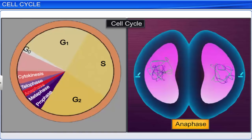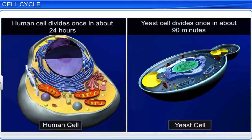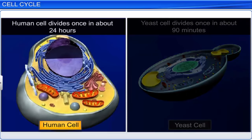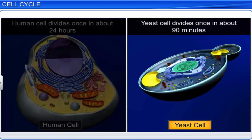The duration of a cell cycle varies from one organism to another. A typical eukaryotic cell, like those in human beings, divides once in about every 24 hours, whereas in yeast, division takes place in about 90 minutes.